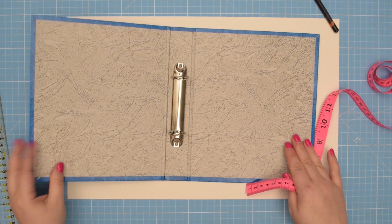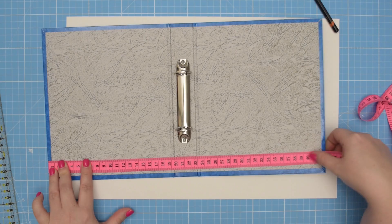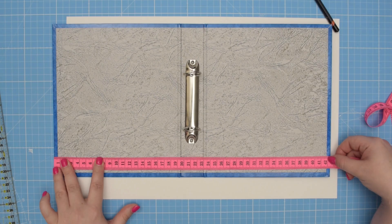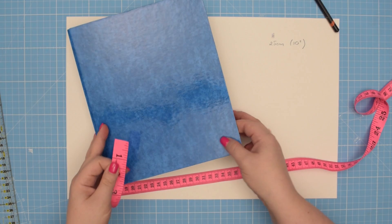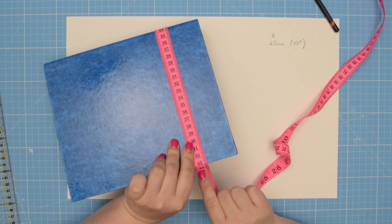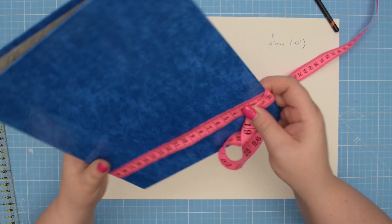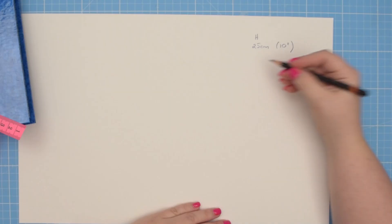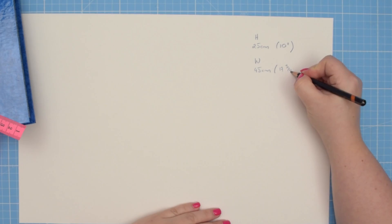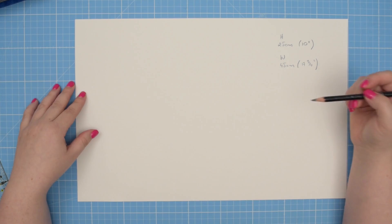Now we're going to measure the width. I would avoid opening the binder and measuring the width like this, although it is much easier because the width will be shorter. As you can see here, the width is 42.5 centimeters. However, when I close it and I measure it this way, the width is 43 centimeters, about 5 millimeters or a quarter of an inch wider. So width is 45 centimeters, which is about 17 and 3 quarters of an inch.